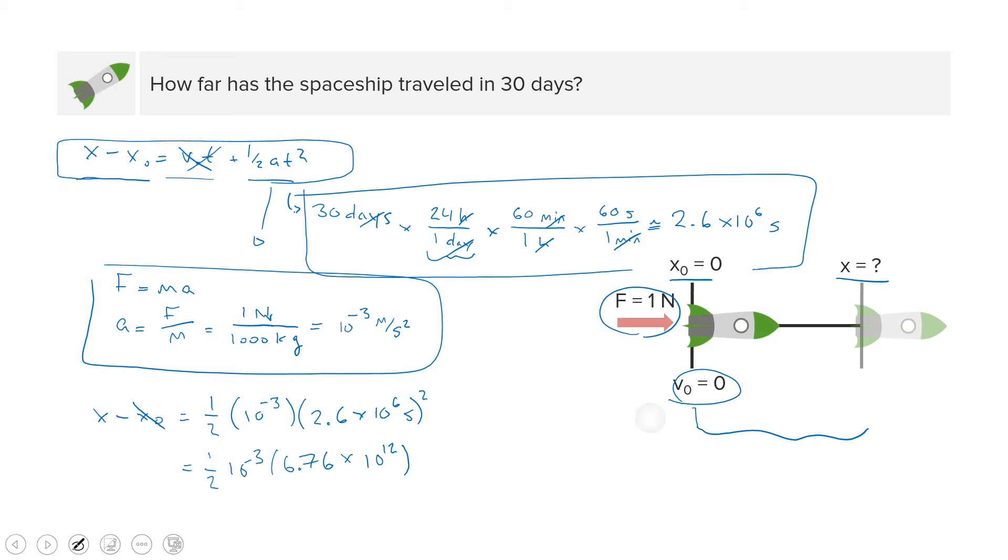Now we do what we've always done with our unit analysis, which is to treat our coefficients, as we call them, the numbers in front, on their own. So we have 6.76 and then divided by 2, and then we treat the powers of 10 on their own. So 10 to the 12 times 10 to the minus 3 subtracts 3 from 12, giving us times 10 to the 9.